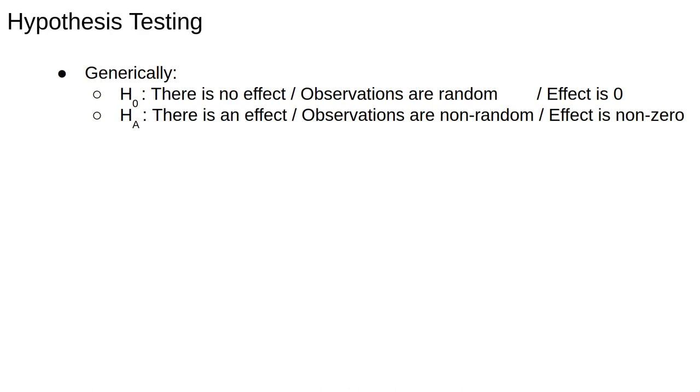Hopefully some examples will make it a bit clearer. Say we have a new drug that we believe cures the common cold. Our null hypothesis is that the drug has no effect, and therefore the alternative is that the drug does have an effect.